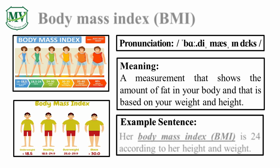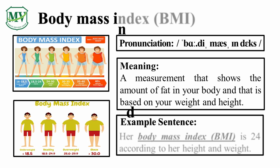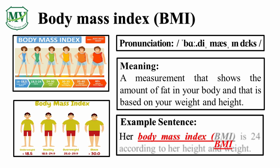Please repeat the word after me. Body Mass Index — BMI. Good job! Let's spell it. B-O-D-Y M-A-S-S I-N-D-E-X — Body Mass Index, BMI. Great! Her Body Mass Index (BMI) is 24 according to her height and weight.